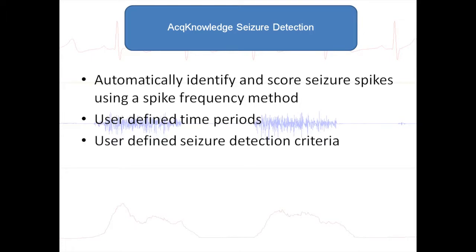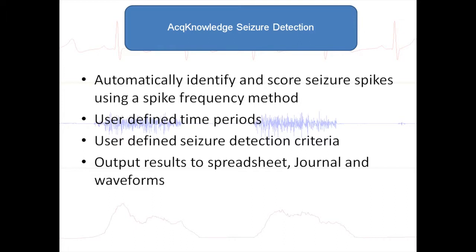The results of the analysis are output to a spreadsheet, a journal file, and can also be displayed as new waveforms. The first waveform shows the frequency of the seizure spikes that were detected. The second channel will identify whether a seizure occurred within a particular epoch.